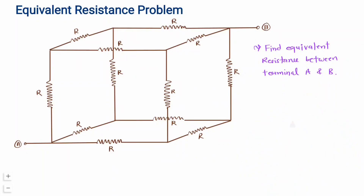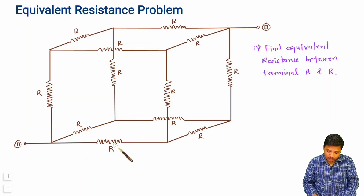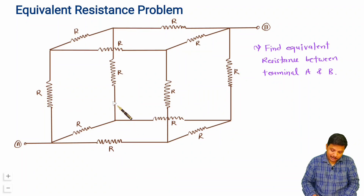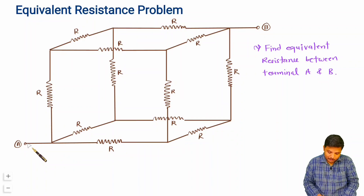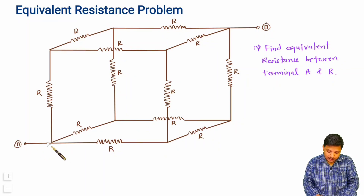In this problem, resistances are connected in the form of a cube, and each resistance has value R. We need to calculate the equivalent resistance between terminals A and B, where these two terminals are connected across the diagonal of the cube.